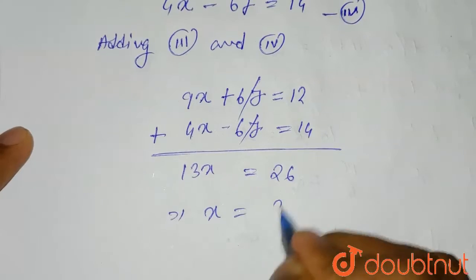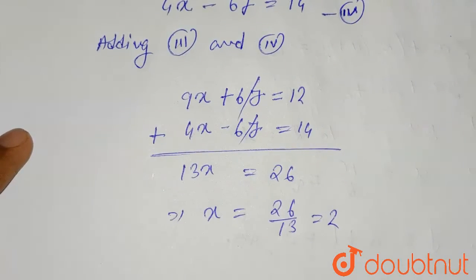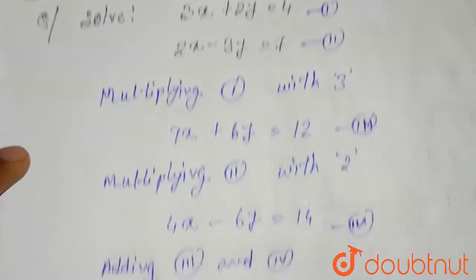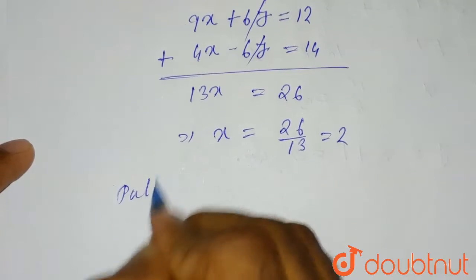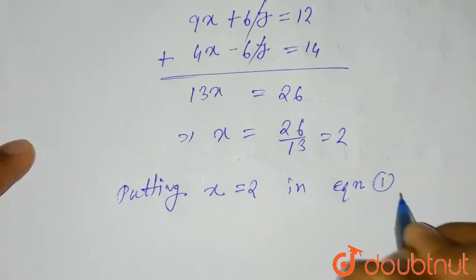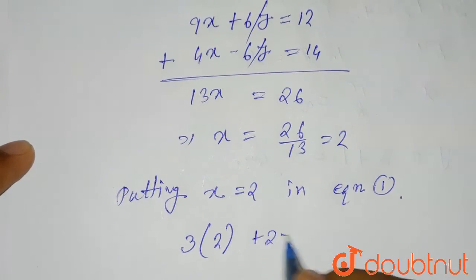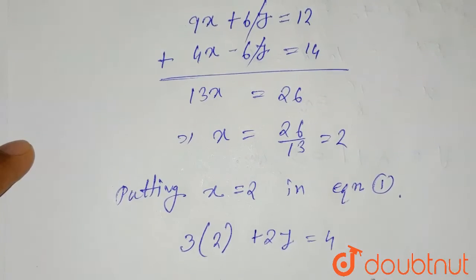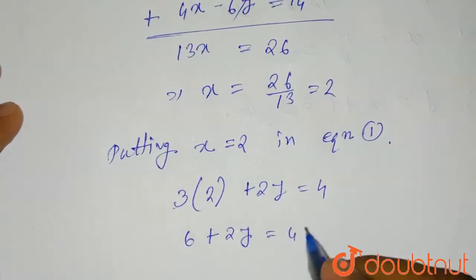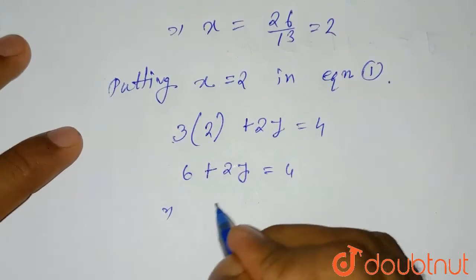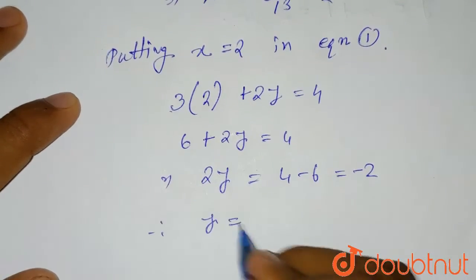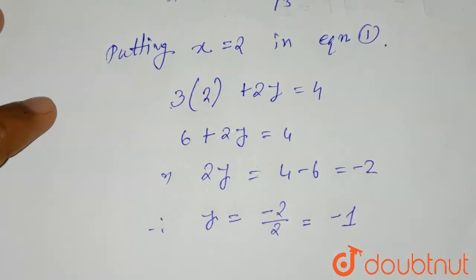Therefore x = 26 ÷ 13 = 2. So the value of x is 2. Now putting x = 2 in equation 1, which is 3x + 2y = 4, we get 3 × 2 + 2y = 4, so 6 + 2y = 4, therefore 2y = 4 - 6 = -2, and y = -2 ÷ 2 = -1.